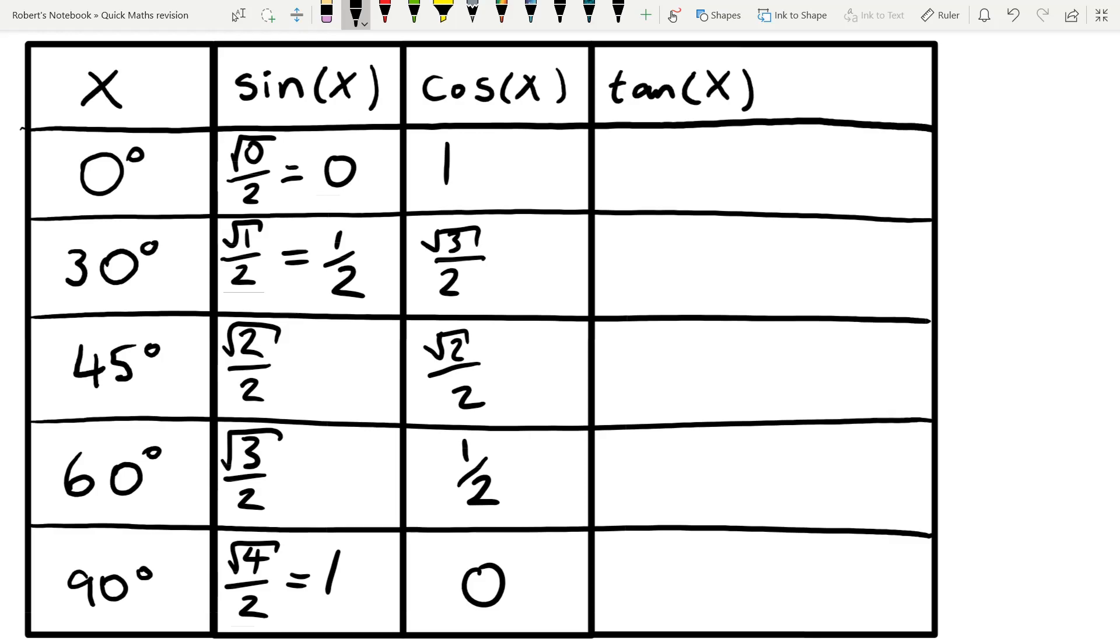All we're going to do is remember to write 0, 1, 2, 3, 4 in the sine column, square root the numerator, and then divide by 2 for each of them. And then cos is we just flip it the other way around. So now the trick for the tan column,